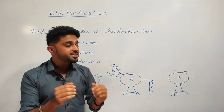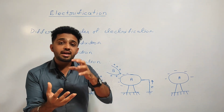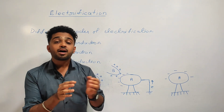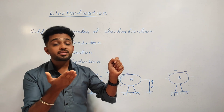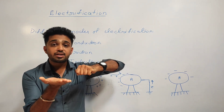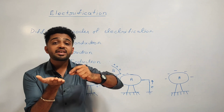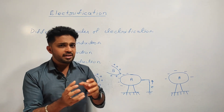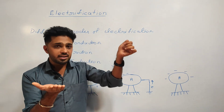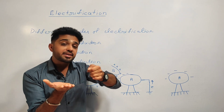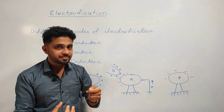The next method is charging by friction. We can observe friction when there is relative motion between two objects. For example, a glass rod rubbed with a silk cloth — the glass rod becomes positively charged and the silk cloth becomes negatively charged. Another example: a plastic comb combed through dry hair will attract paper pieces, because the plastic comb becomes charged through friction.